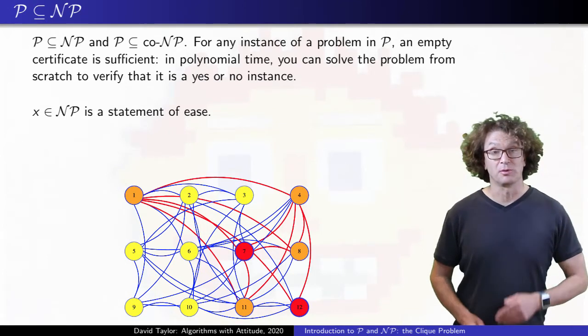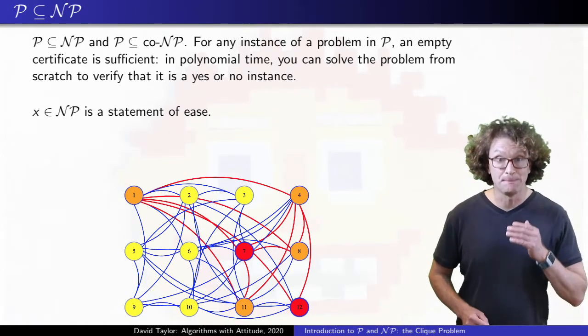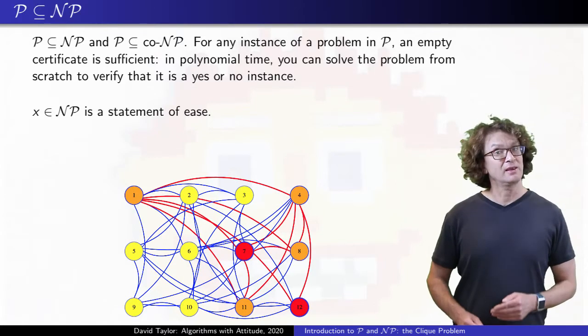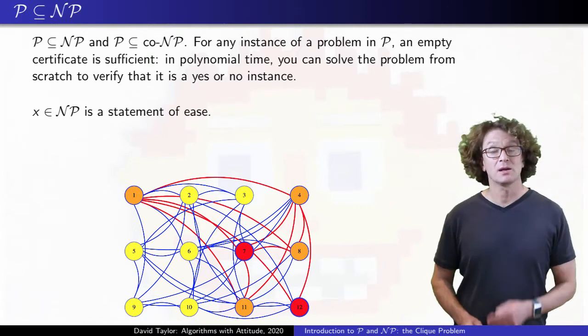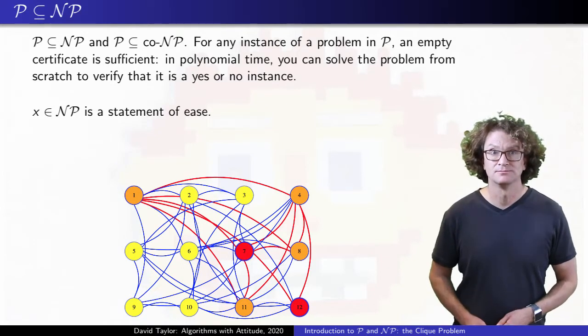Everything in P is also in NP. It would be like if I told you that as a professor, I make less than a billion dollars per year. That gives an upper limit on my salary. It is a high limit, but maybe I don't even make half that amount.